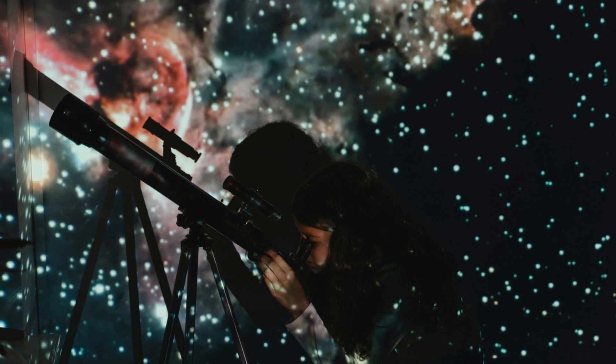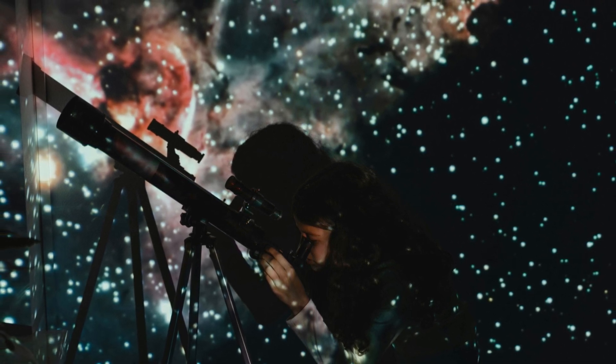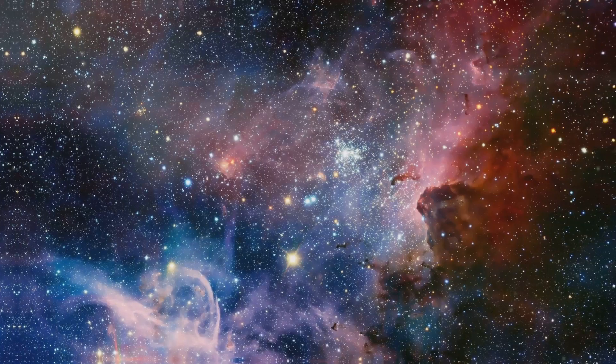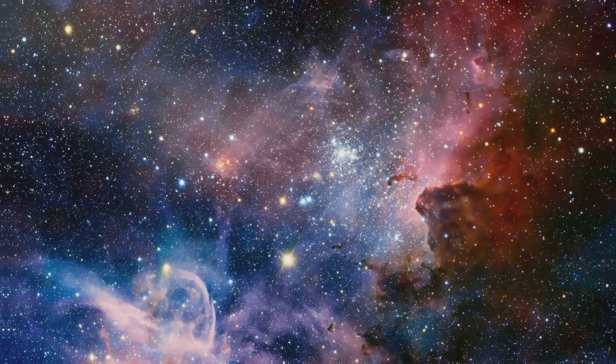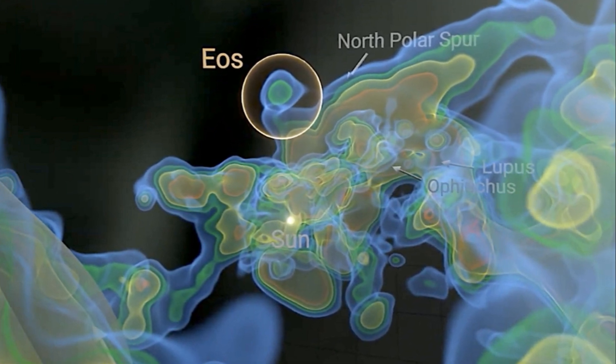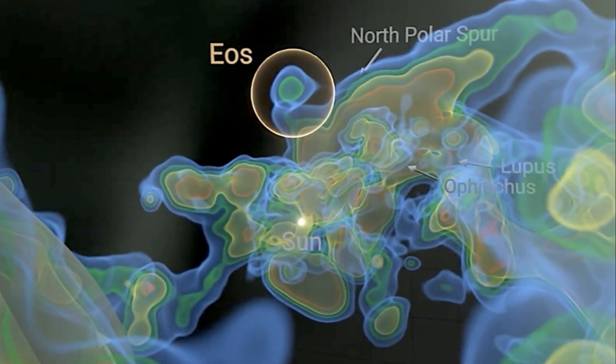Astronomers are already planning observations with next generation telescopes to study Eos in greater detail. They'll be looking for signs of star formation, mapping the cloud's internal structure, and analyzing its chemical composition to understand its potential for birthing new suns.